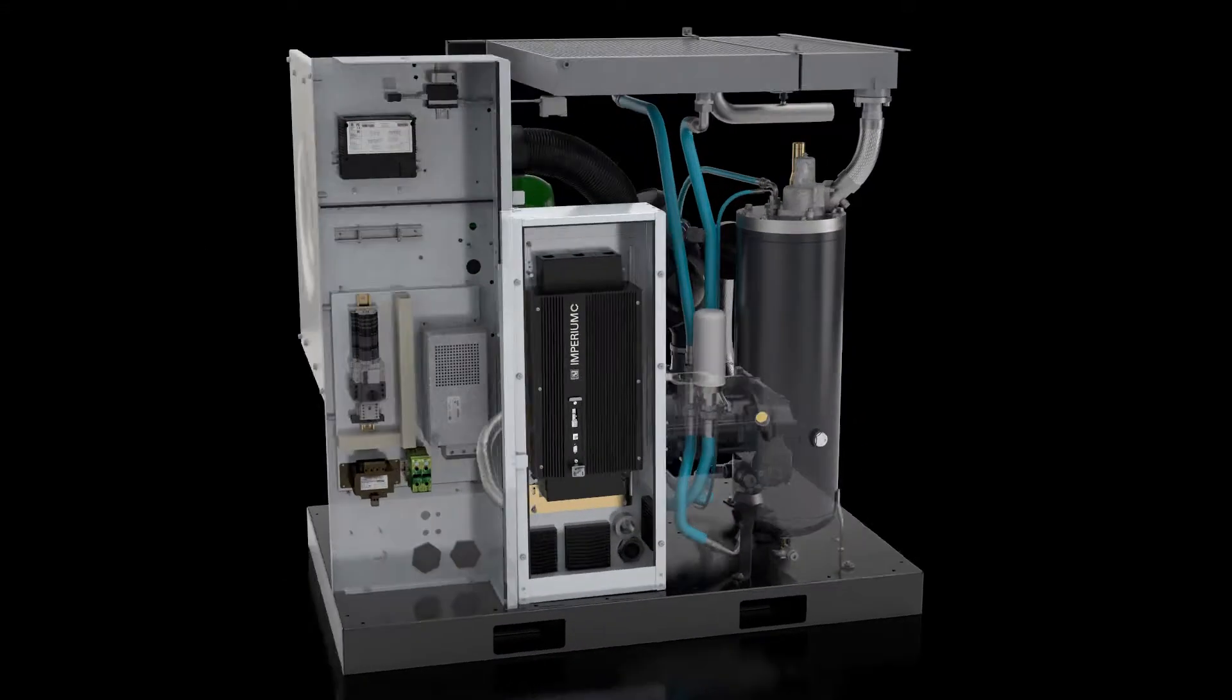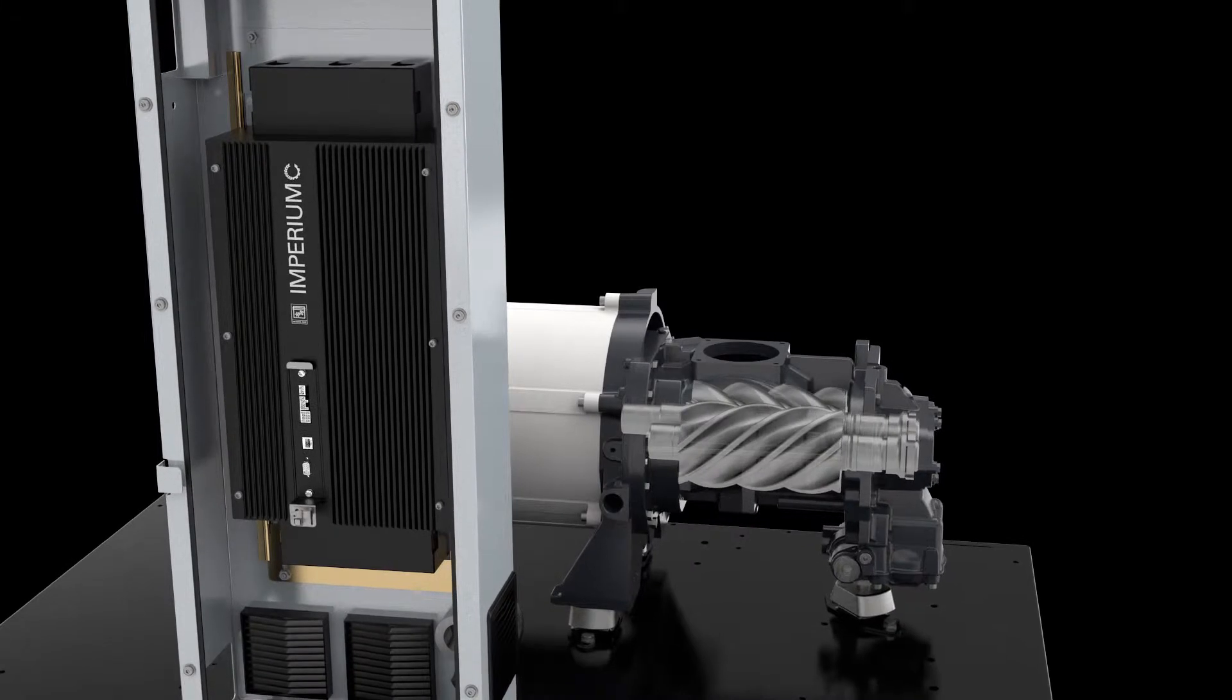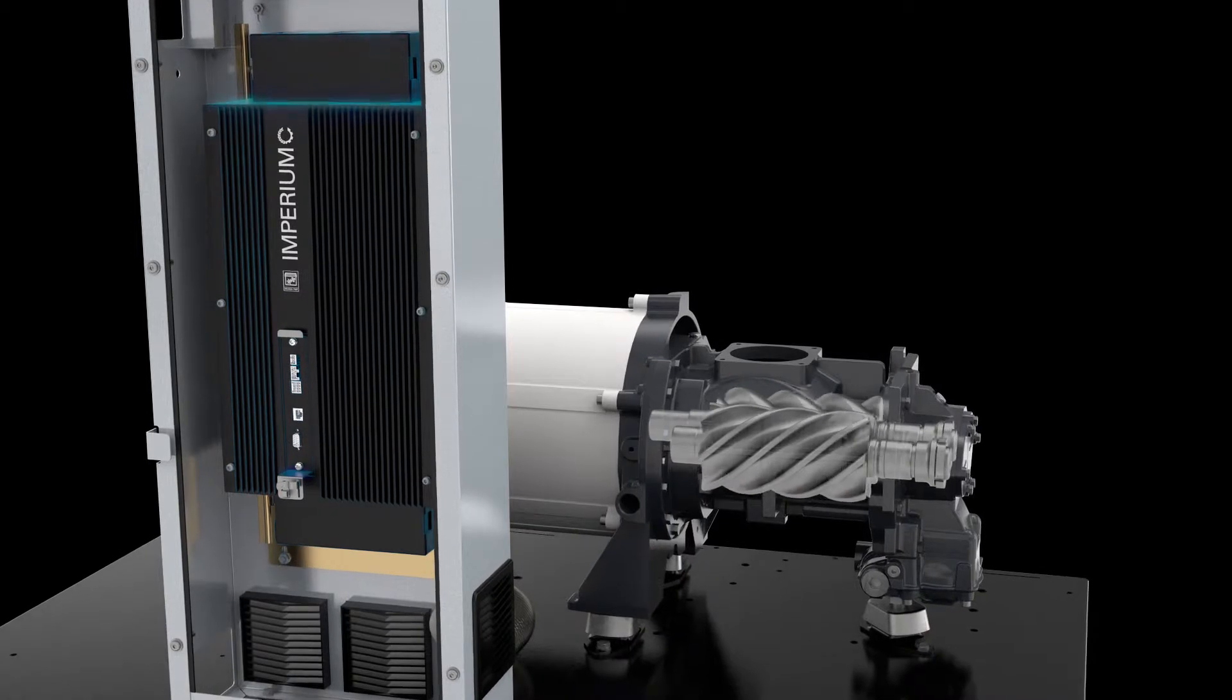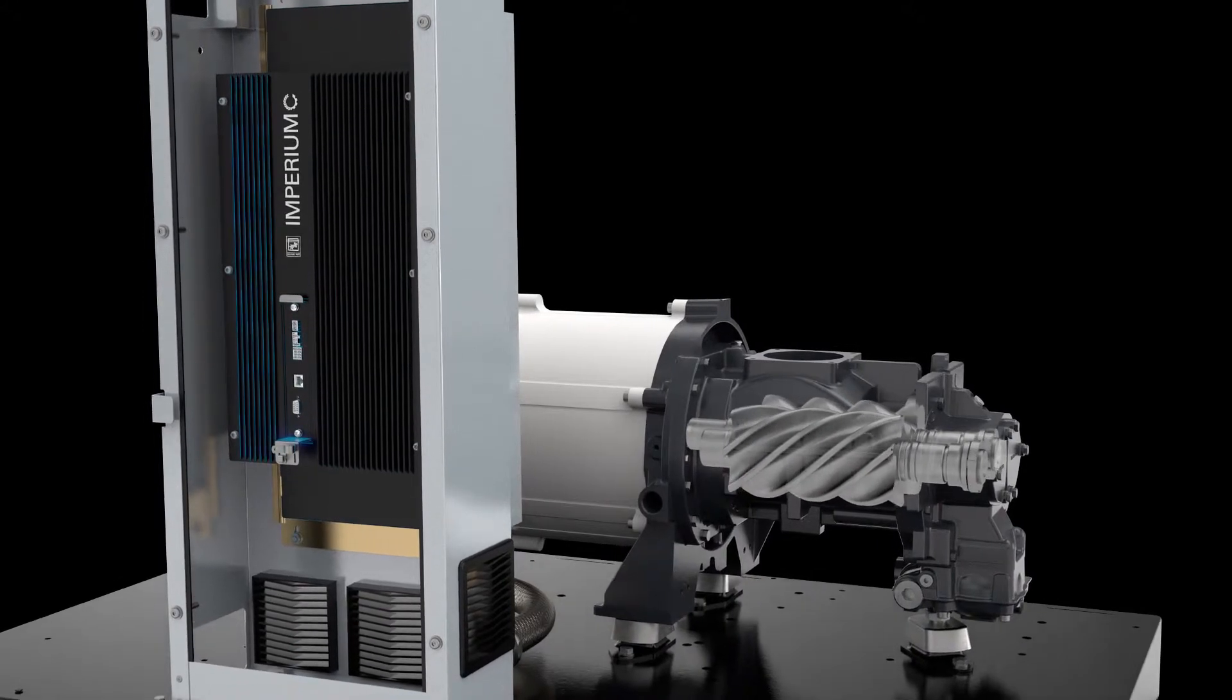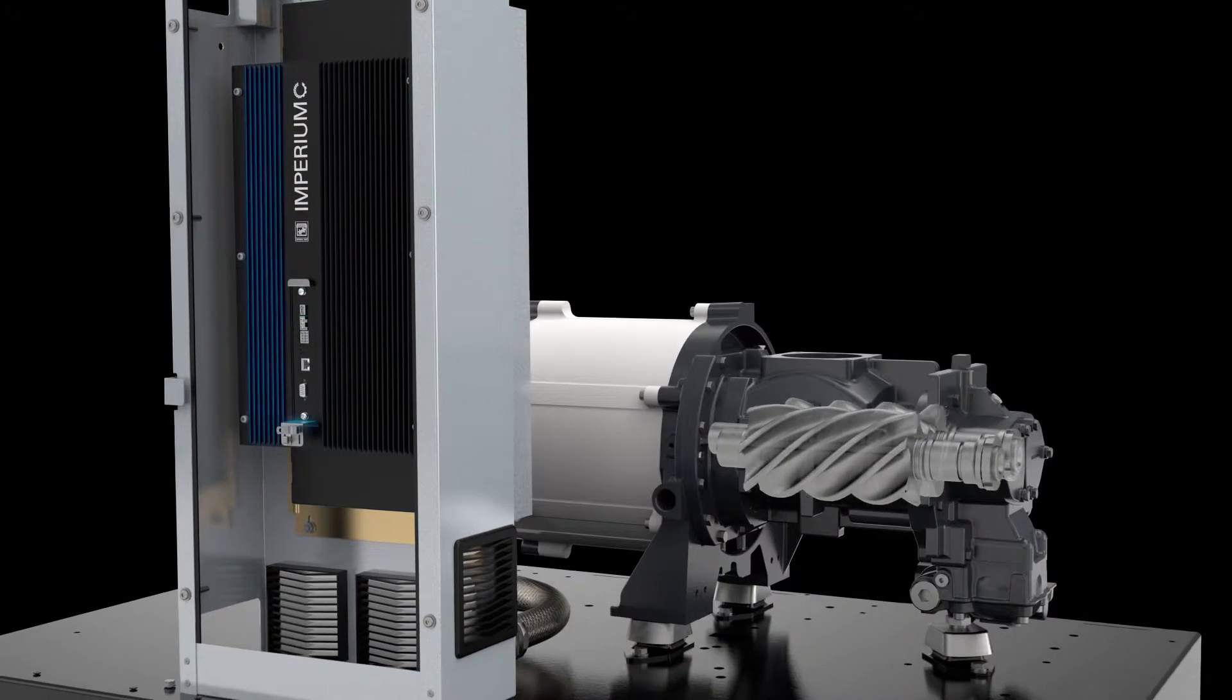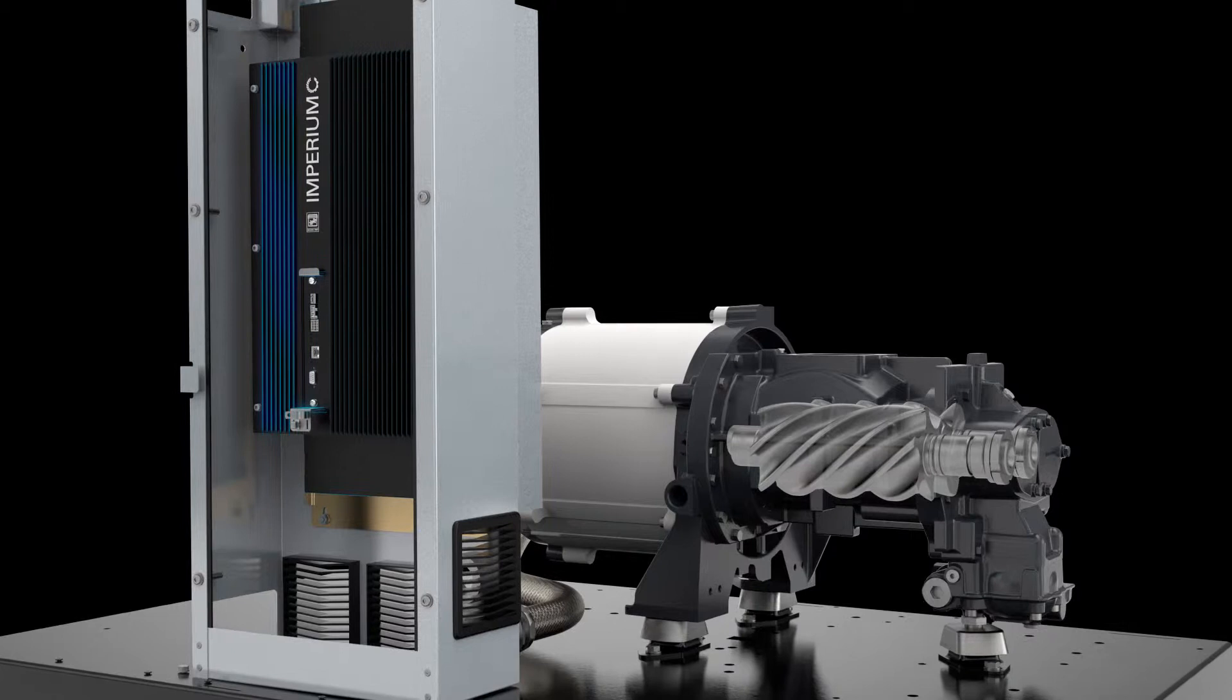As the majority of applications have a variable demand for compressed air, significant energy savings can be achieved with the Imperium variable speed technology. By regulating the motor speed, the in-house designed Imperium inverter perfectly matches the compressed air supply to the actual demand. Compared to traditional fixed-speed compressors, the Imperium ensures no energy is wasted, cutting down your energy bill and sparing the environment.